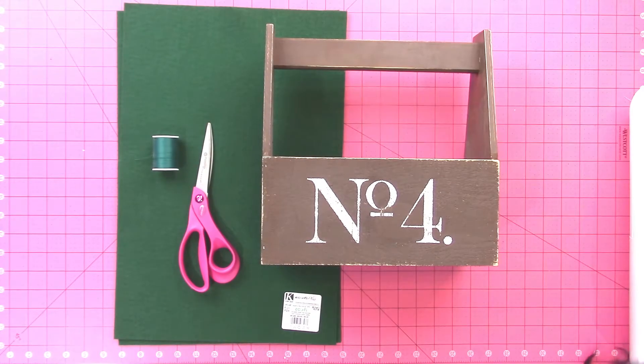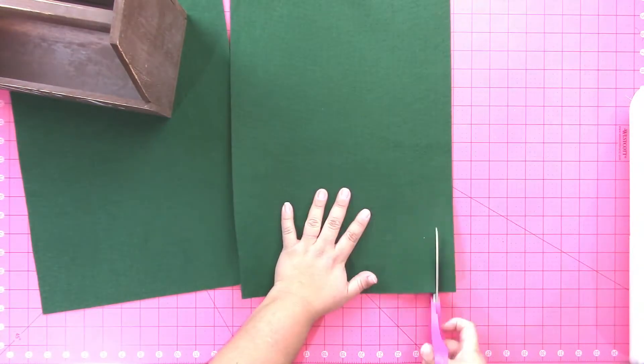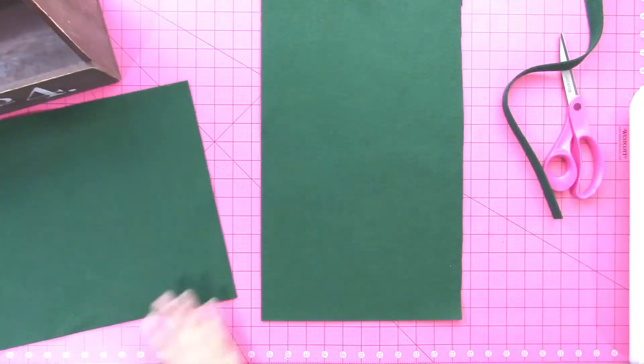This insert is made from Kunin EcoFi felt, which is made from 100% recycled plastic bottles, and I'm using the Premium Plus felt. It's really thick and dense, and it washes up really great.